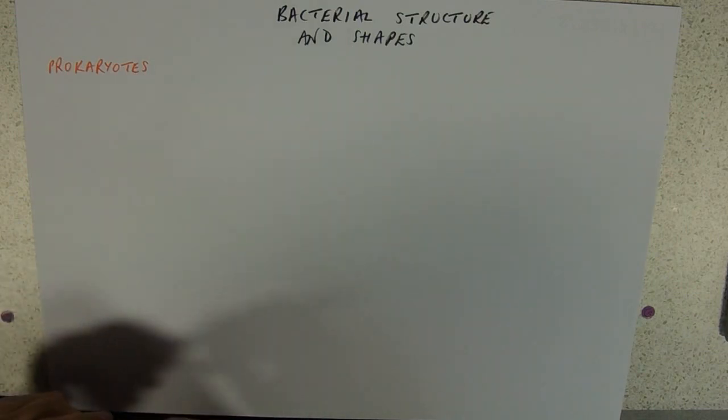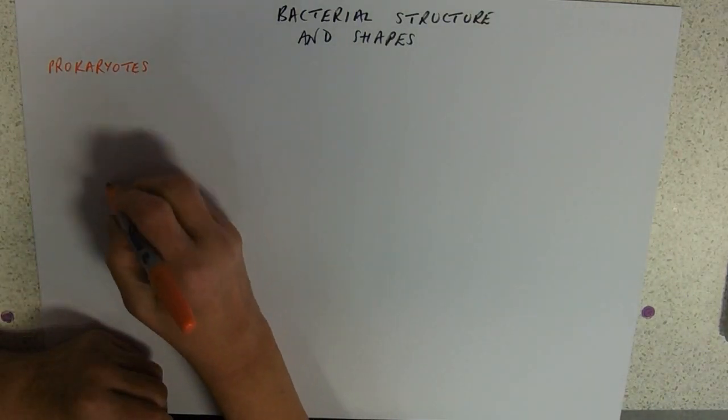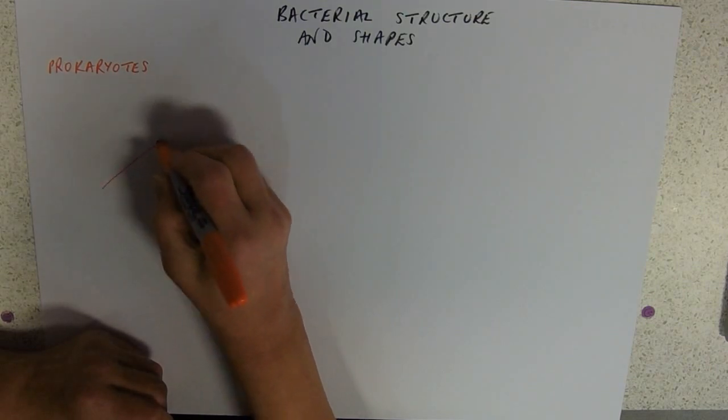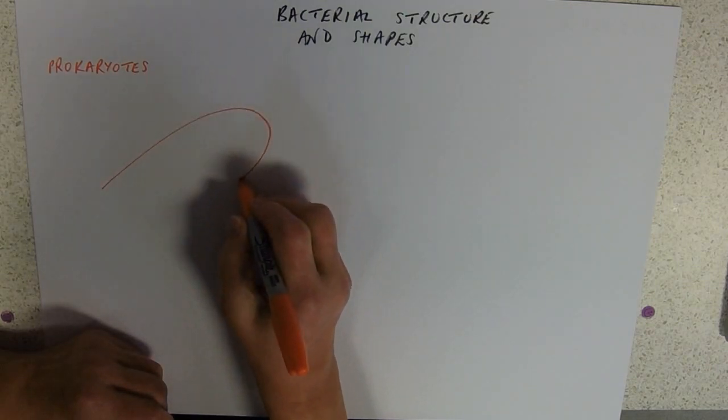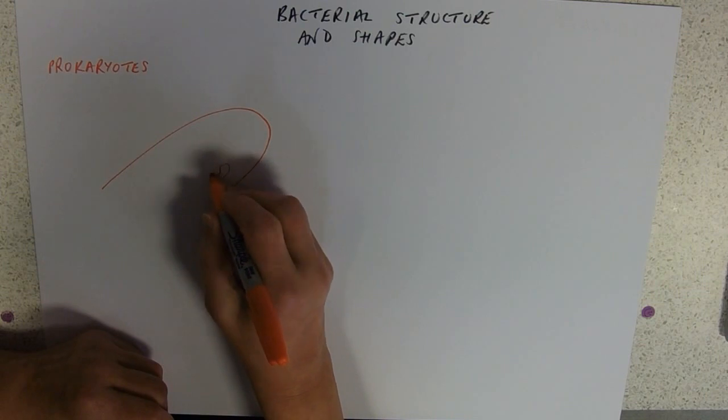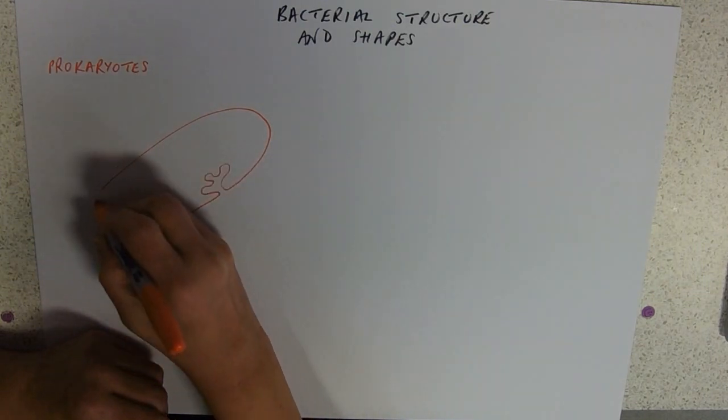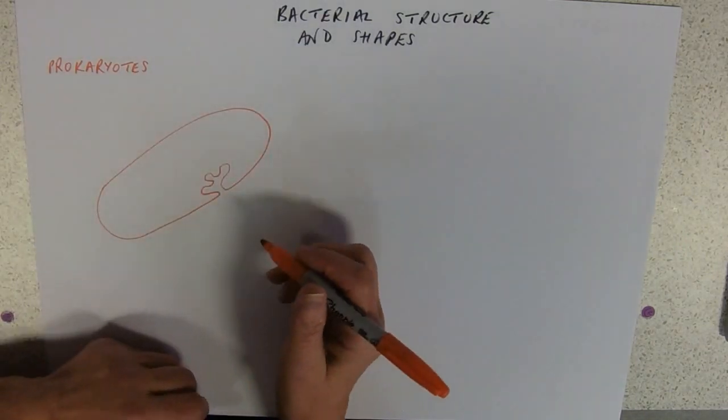So, prokaryote structure. What are we looking at? We're looking at bacteria. They're dead easy to draw. So we've got a cell membrane with its little infoldings called the mesosome.